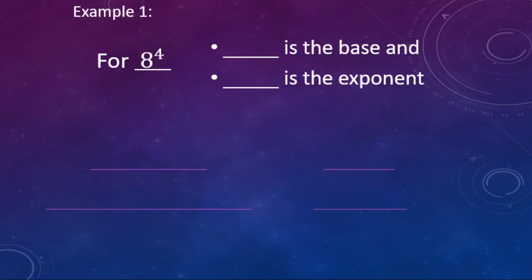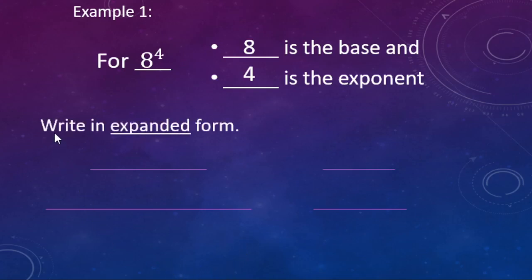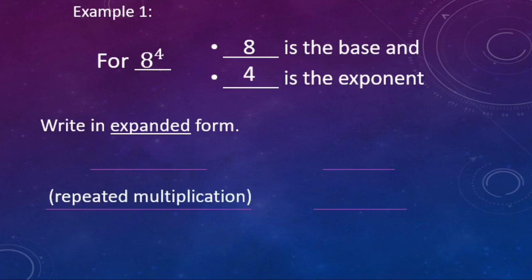Let's look at a couple of examples. We have eight to the fourth power — eight to the power of four, eight to the fourth. The big number is the base; in this case eight is the base. The exponent is written a little bit higher than the base in a smaller font — it's a superscript. So four is the exponent here. Pretty straightforward.